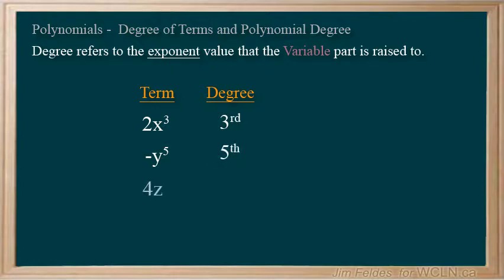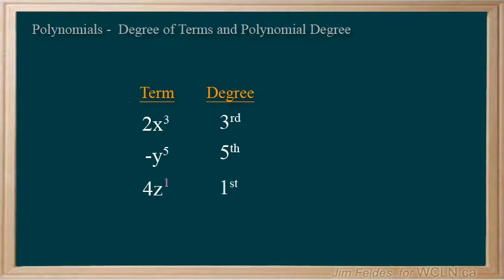4z is a first degree term. Remembering that anything raised to the first power is simply itself, so the 1 is implied. What about the degree of a constant like negative 3? This one's a bit of a stretch, but recall we have suggested with a constant that the variable part could be shown raised to a 0 power. This means it equals 1 and thus once again is not needed to be included. In a way we could suggest it has a 0th degree, but for simplicity we just refer to it as a constant term.